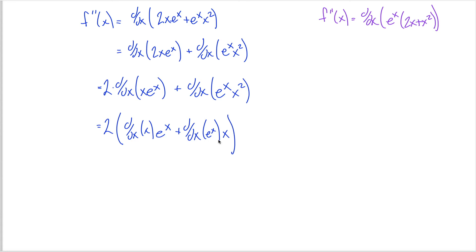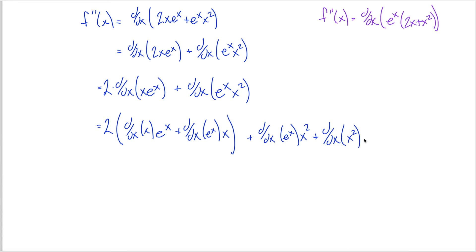Don't stop here — all of this work was just this half of it. I have to do the same thing over here. I want to add to this the derivative of the first thing, the e to the x, times the second thing, the x squared, plus the derivative of the second thing, the derivative of x squared, times the first thing, the e to the x.